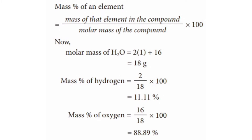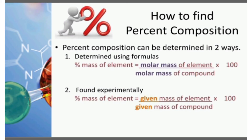We divide the mass of each element by the molecular mass of the compound. For hydrogen: mass is 2, so 2 divided by 18 times 100 = 11.11%. For oxygen: mass is 16, so 16 divided by 18 times 100 = 88.89%. These are the mass percentages of hydrogen and oxygen in water.